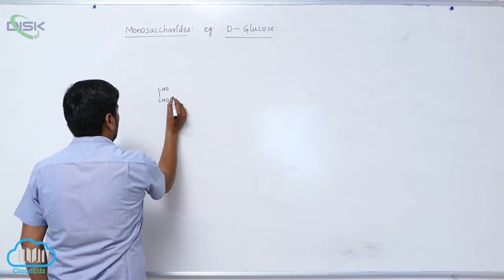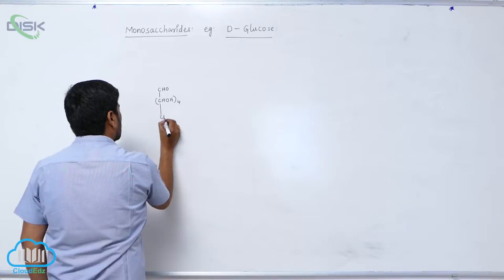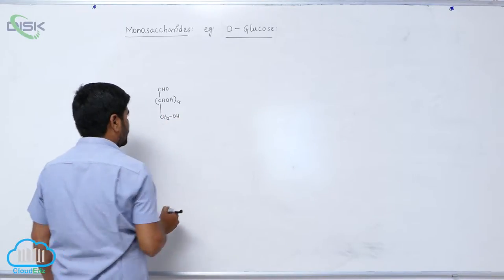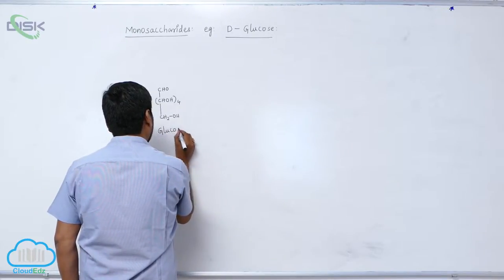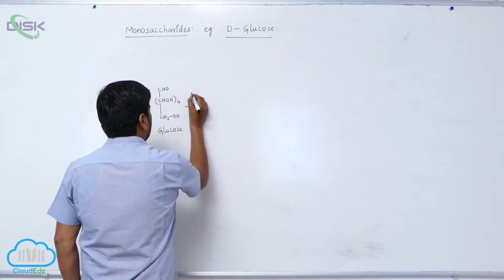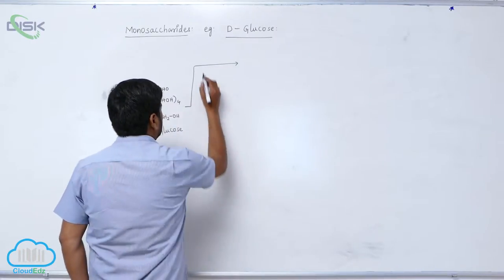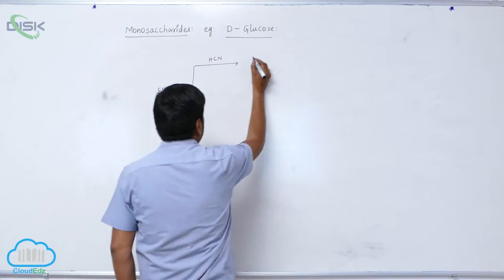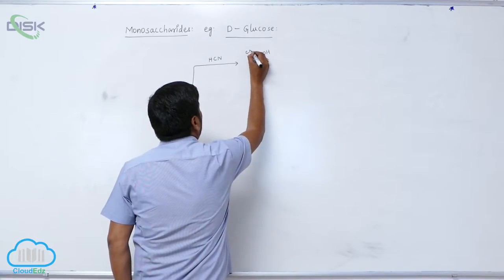Aldehyde CHOH four times then CH2OH - this is glucose. First it reacts with hydrogen cyanide to form cyanohydrin CN.